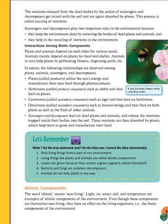In nature, the following relationships are observed among plants, animals, scavengers, and decomposers. Plants are called producers — plants ko producers kaha jata hai. Plants utilize the sun's energy and manufacture their own food through photosynthesis.